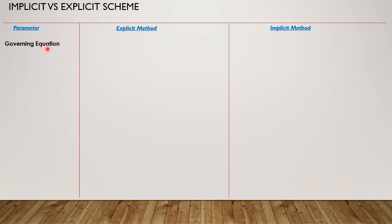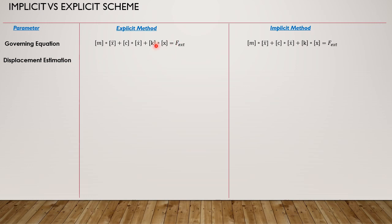The first comparison point is the governing equation. The governing equation remains the same no matter which scheme you use — whether explicit or implicit. It uses Newton's law: F_external equals mass times acceleration, plus damping times velocity, plus stiffness times displacement. For the explicit scheme, displacement is estimated by rearranging for acceleration on the LHS. For the implicit scheme, it is found using displacement, so we keep everything on the RHS except displacement.